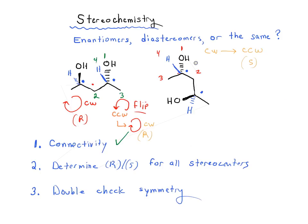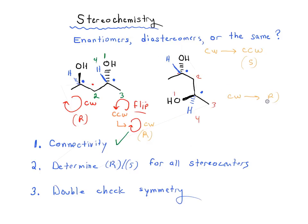And for the lower stereocenter on the right molecule, we assign priorities 1, 2, 3, and 4. Going in the clockwise direction — so this is R.